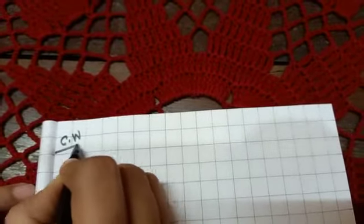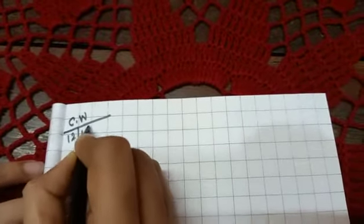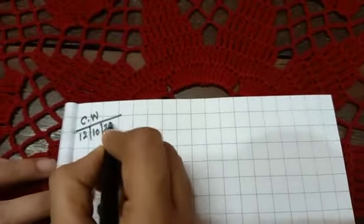Okay children, here you will write C dot W and date. Today's date is 12 oblique 10 oblique 2020.